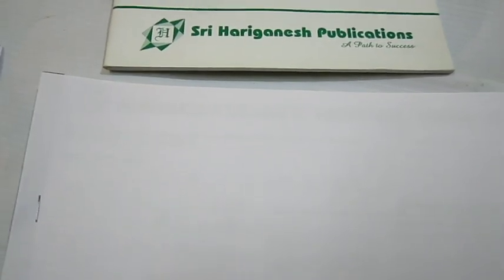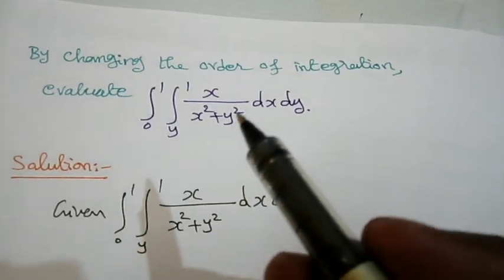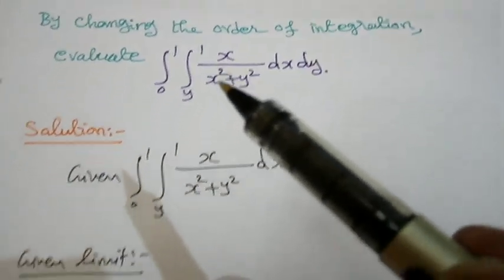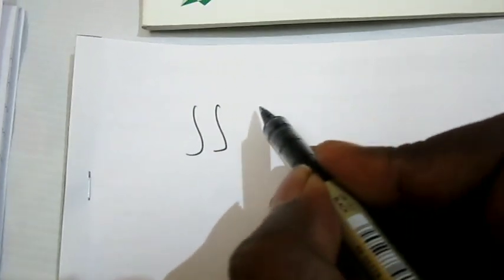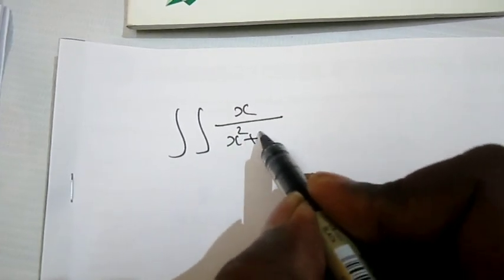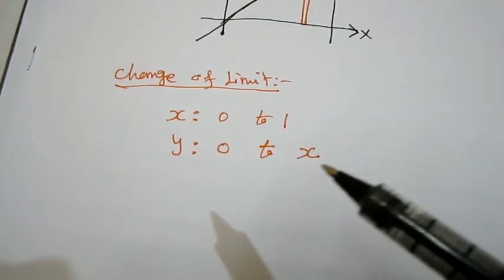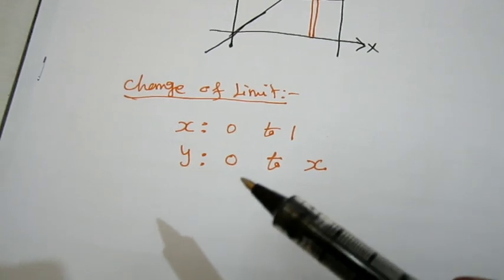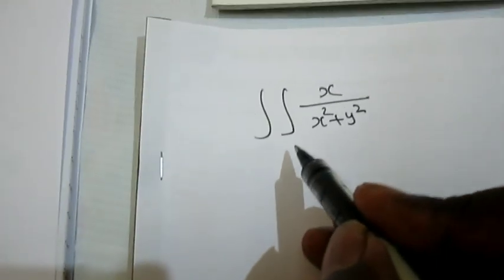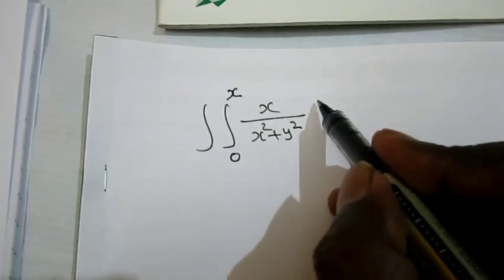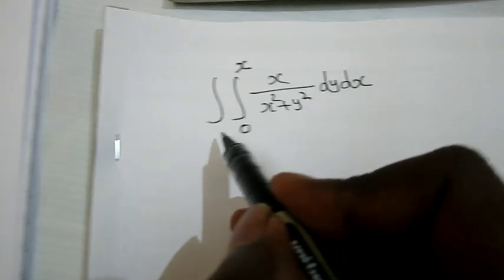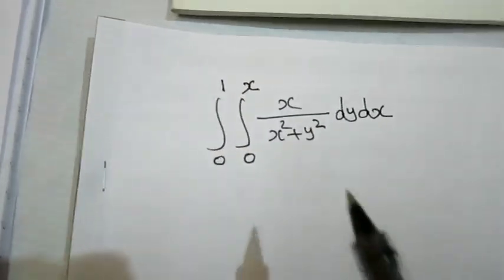The given integral is x divided by (x squared plus y squared). I want to use the change of limits: the y limit is 0 to x (the variable limit), so y is the inner integral — dy first, then dx. The x limit is 0 to 1.